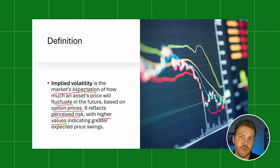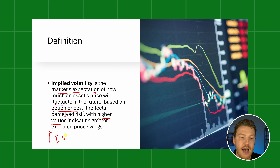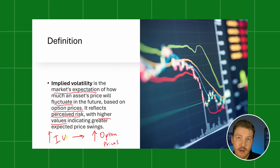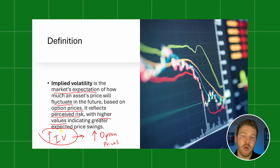In general, a higher implied volatility implies higher option prices. The long position on a call or put option would tend to prefer volatility to increase, whereas the short position on a call or put option would prefer for it to go down.